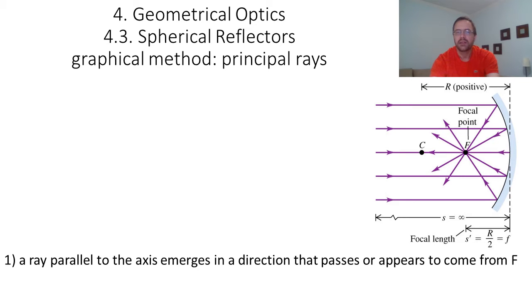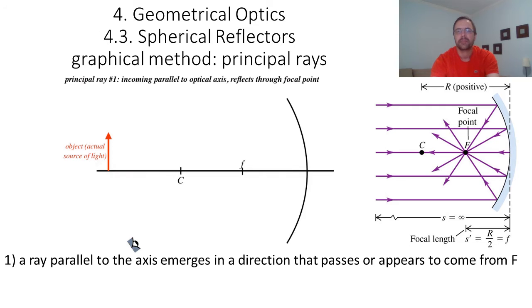You can draw any ray that is parallel to the axis, and after being reflected by the mirror, that ray should emerge in a direction that passes or appears to come from f. But in fact, you don't need to draw many rays. You only need one. The only one that's interesting to draw is the one that also passes through the object.